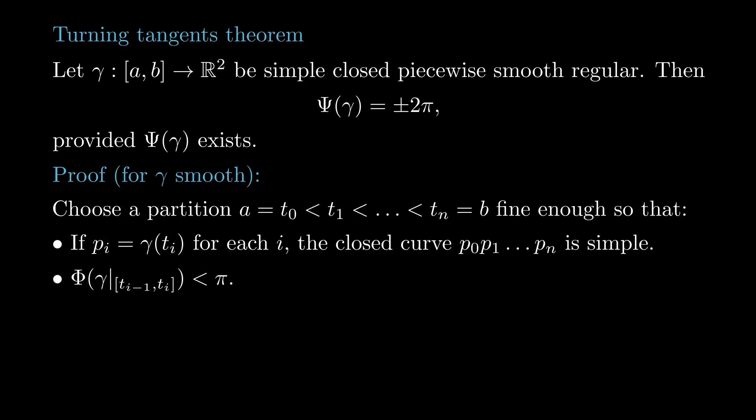We begin by choosing a partition of the domain so that when we take the inscribed broken line corresponding to this partition, it is a simple closed polygon, and the total curvature along each subinterval is less than π.